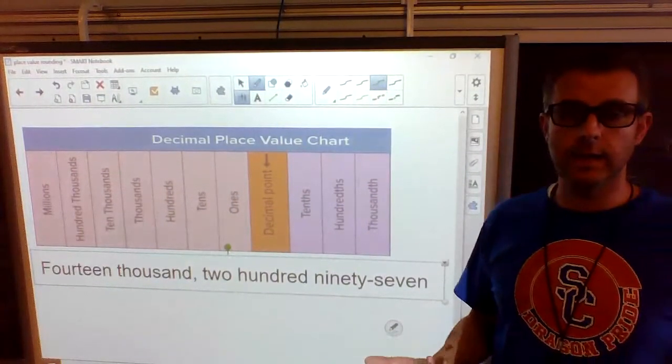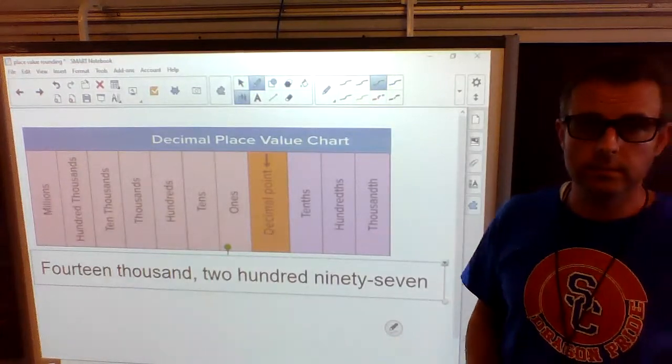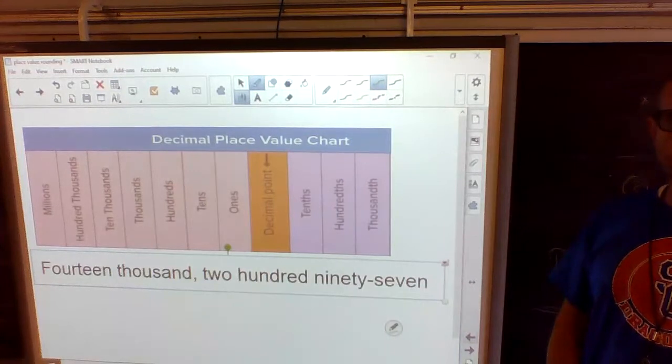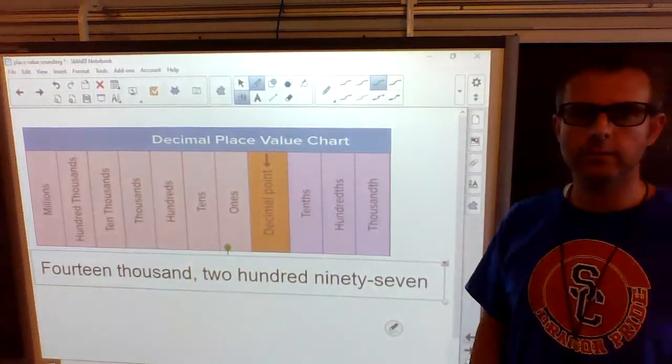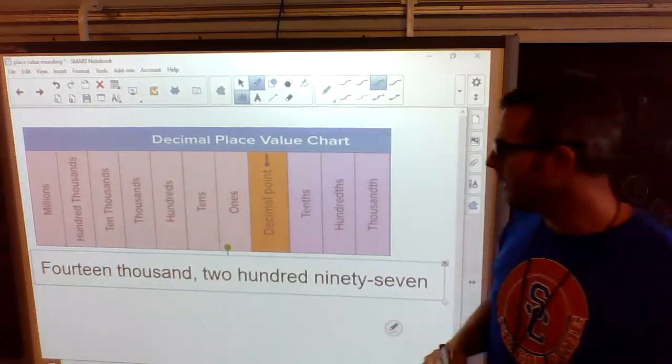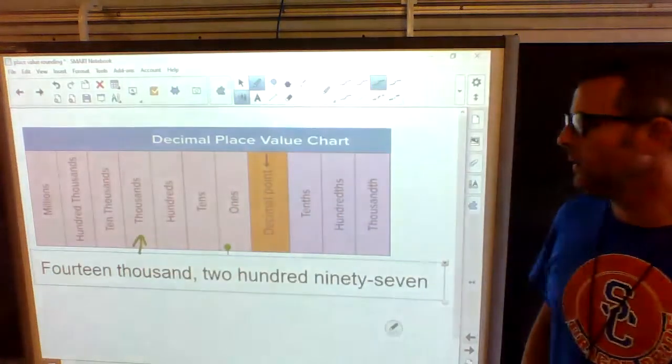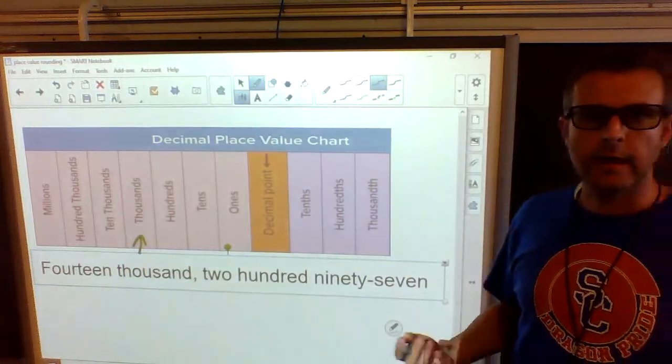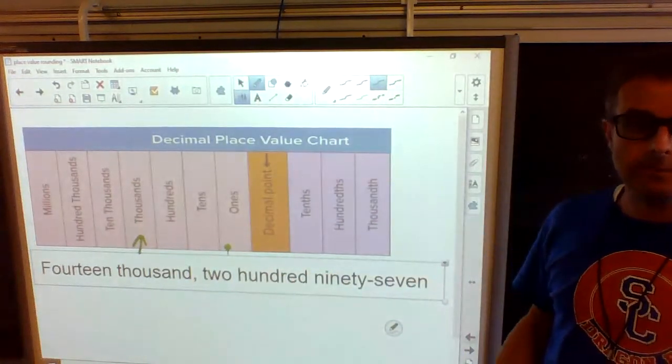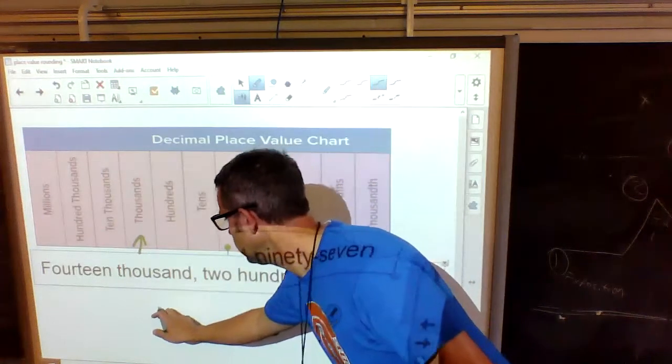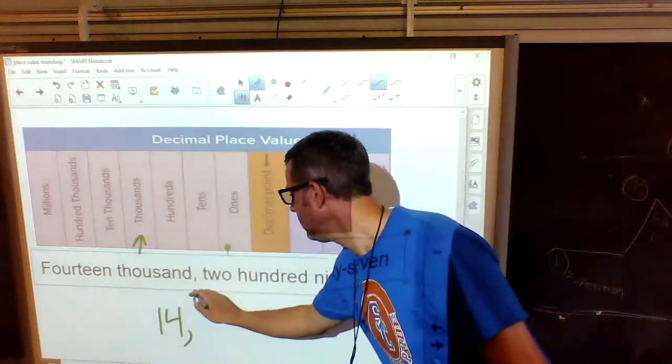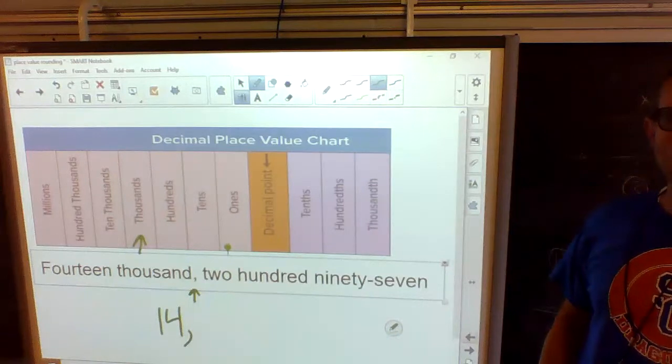So this one, it gave us the words. We have to turn it into a number. So we have fourteen thousand two hundred ninety-seven. So what do we have first? What's before the comma? We have fourteen thousand. Well, if I'm thinking about my place value chart, I know that that thousand is right here. And right after a thousand, that's where a comma goes. Look, they even put the comma there for you. So we can write fourteen first. How do we write fourteen? Yep, it's a one and a four. And then I'm going to put the comma.